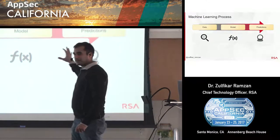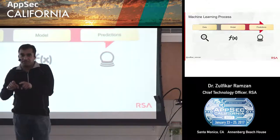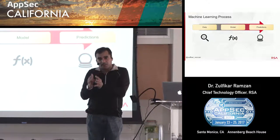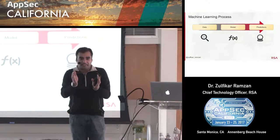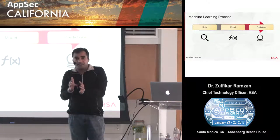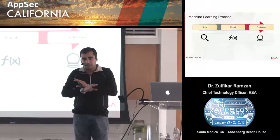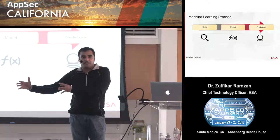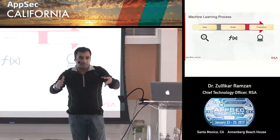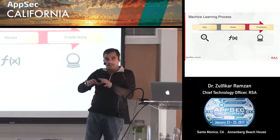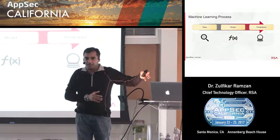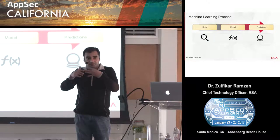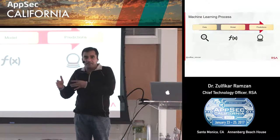Machine learning in general involves three parts — I'm labeling these explicitly because it helps us understand some of the pitfalls and best practices. Typically there are three phases: you start off with data, then from that data the goal is to generate a model — a more compact representation adequately explained by the data. The idea is then to take that model and apply it to new instances: can we draw inferences from existing data and use that to reason about things we haven't seen before?